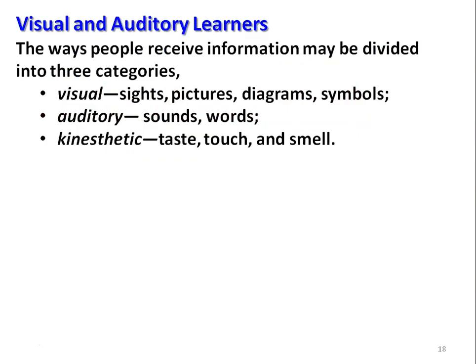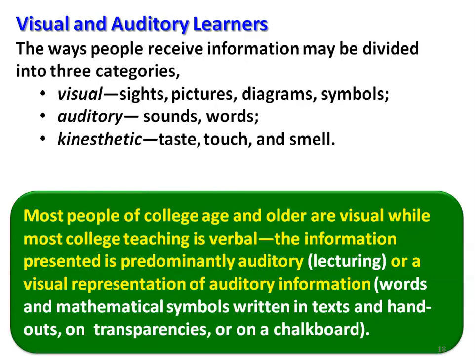Visual and auditory learners: the ways people receive information can be divided into three categories — visual (sight: pictures, diagrams, symbols), auditory (sound and words), and kinesthetic (taste, touch and smell). Most people at college age are predominantly visual learners. I have conducted a test with students that proves they are visual, while most college teaching is verbal — the information presented is predominantly auditory.